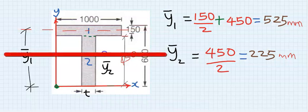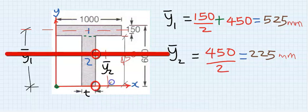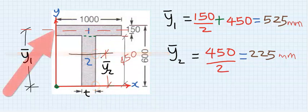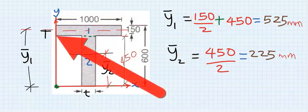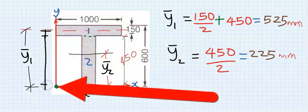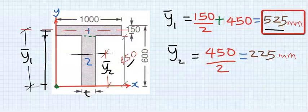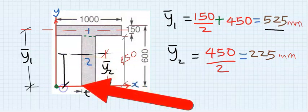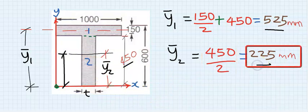For the second rectangle, we split it into two and the distance from that point to the origin is the centroid of the second rectangle. From this point to this point is 150 divided by 2, which is 75, and from this point all the way to the origin we get 450 — combined that gives 525. From this point down to the origin is 450 divided by 2, which is 225 millimeters.